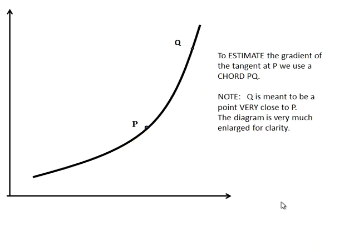To estimate the gradient of the tangent at P, we use a chord, PQ. Now, Q is meant to be a point very close to P, and the diagram is very much enlarged for clarity.